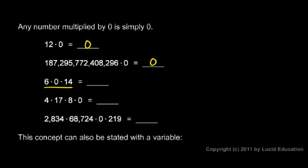6 times 0 times 14 equals 0. We've got multiple factors here. As long as one of them is 0, we end up with 0. Same thing here: 4 times 17 times 8 times 0 is 0.